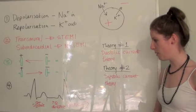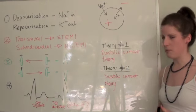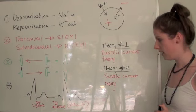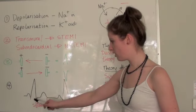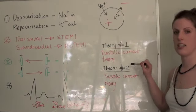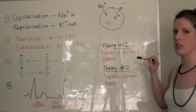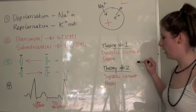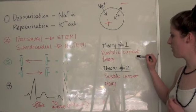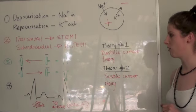The fourth thing you need to remember, this might be slightly new information because we haven't really looked at it like this before, but these two theories which explain how ST segment elevation and depression occur go by the diastolic current theory and the systolic current theory.